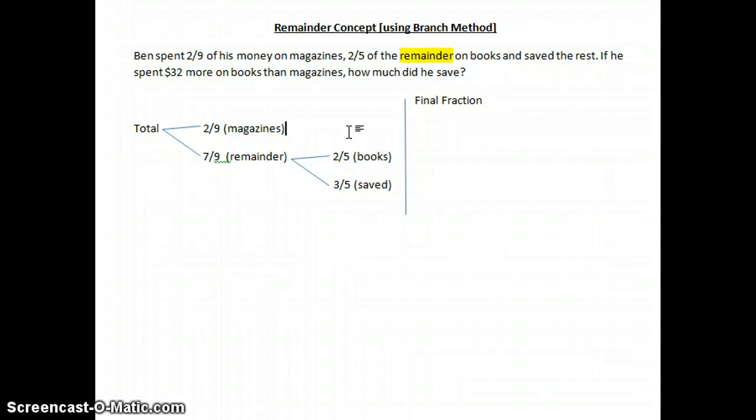For magazines, it's clearly just 2 out of 9. But for this, it's a little bit different. For final fraction, how do we know how much the final fraction of his money that spends on books?